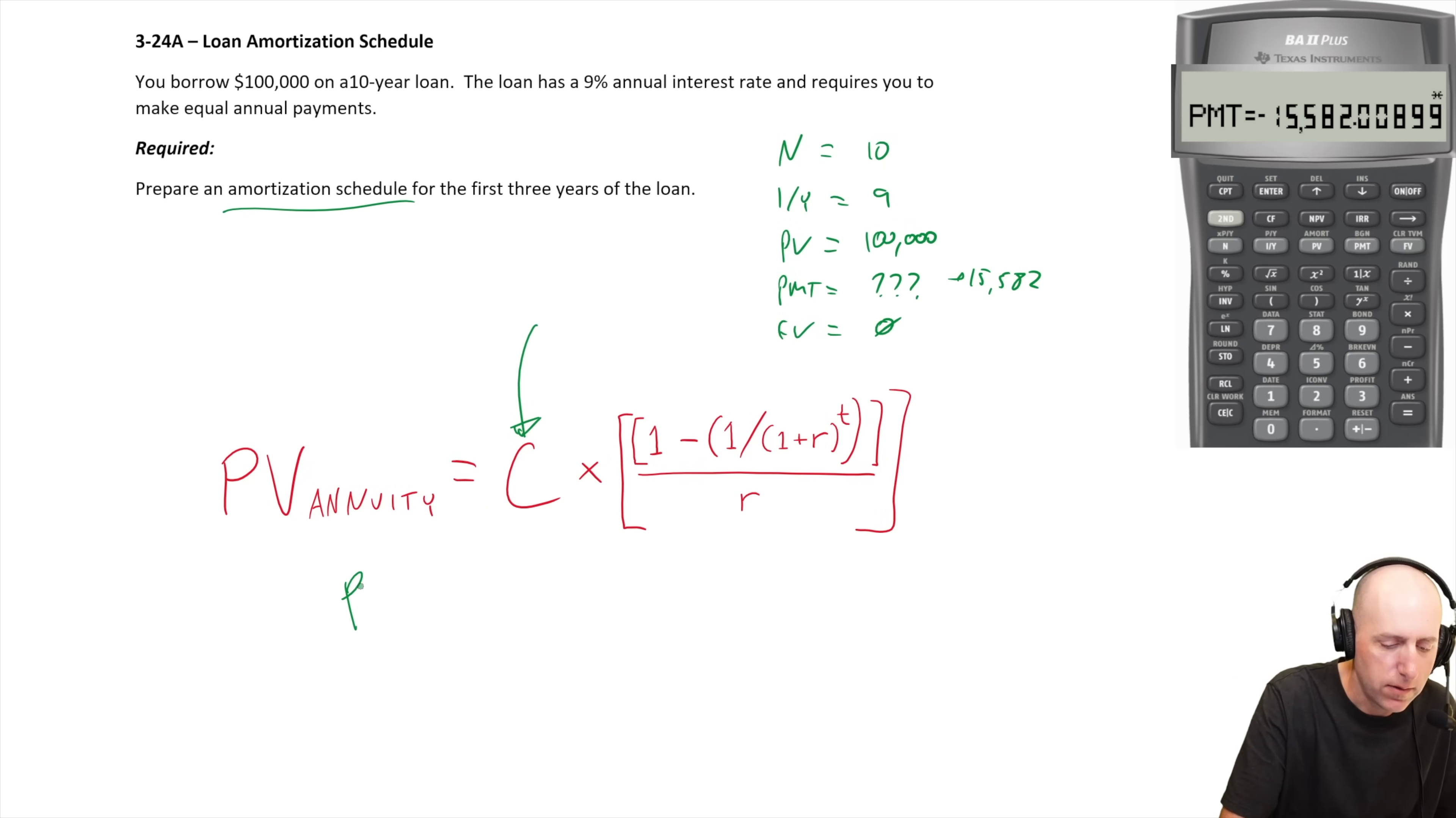Let's do that in the PV of an annuity. If you want, you can skip ahead like a minute if you are satisfied with 15,582, but we'll do the math here. So PV is a hundred thousand equals we're solving for C times one minus one over 1.09, one plus R to the T to the power of 10, all divided by R, which is 0.09.